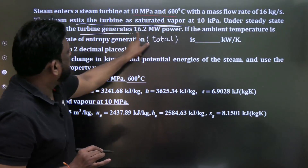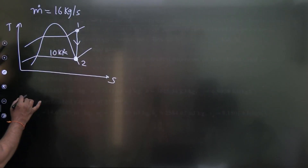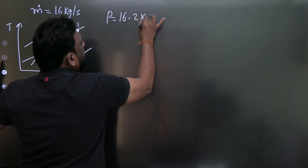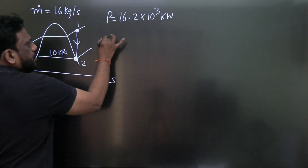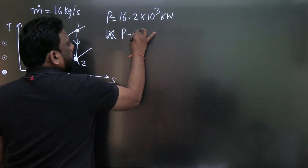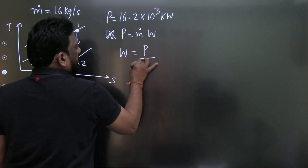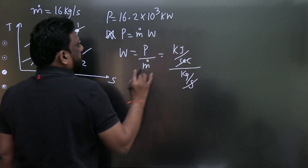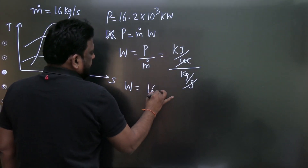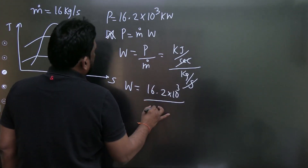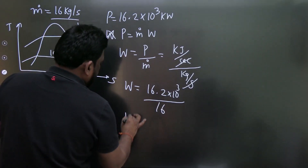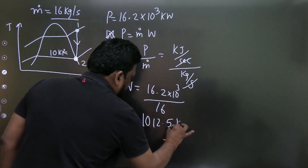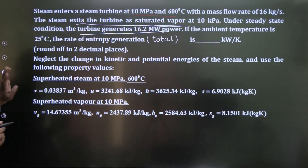Under steady conditions the turbine generates 16.2 megawatt power. Power equals mass flow rate times work, so work = power / mass flow rate = 16.2 × 10³ / 16 = 1012.5 kJ/kg.